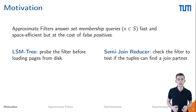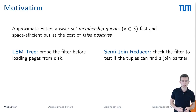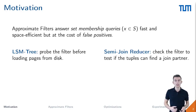Approximate filters are particularly attractive for applications that perform expensive operations like remote data or disk access. Log-structured merge trees, for example, first check an in-memory filter before fetching a page from disk, and thereby avoid unnecessary accesses and improve lookup times. In databases, approximate filters can be used as a semi-join reducer. We construct a filter for the build side of the join and use it in the probe pipeline to skip tuples without a join partner early on.